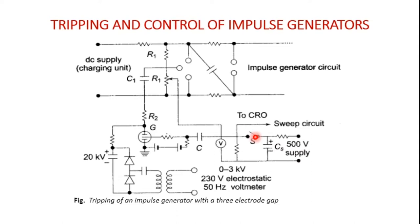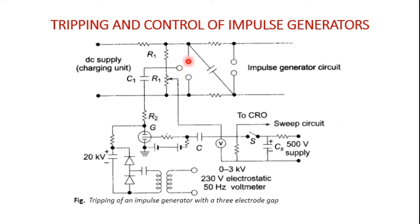When switch S is closed, capacitor C produces an exponentially decaying pulse of positive polarity, which goes to the sweep circuit and initiates an oscilloscope time base. When the thyratron conducts upon receiving the pulse, it produces a negative pulse via capacitance C1 at the central electrode of the three electrode gap arrangement, raising the voltage between the central and top electrode above its sparking potential, initiating conduction and sparking between the two electrodes.